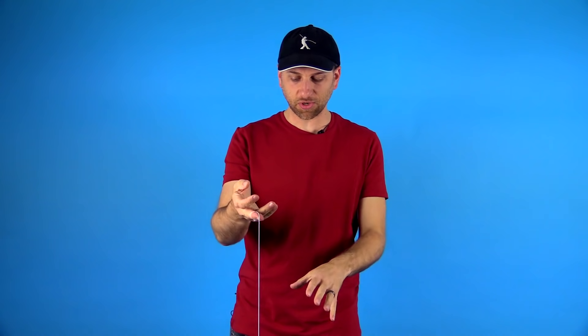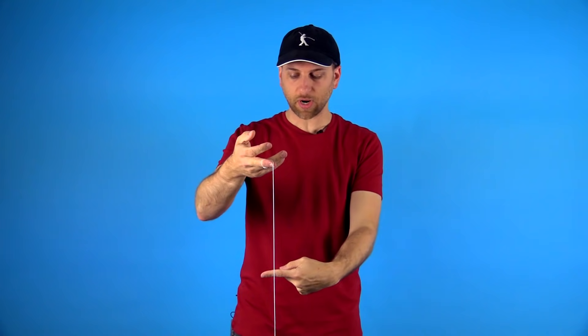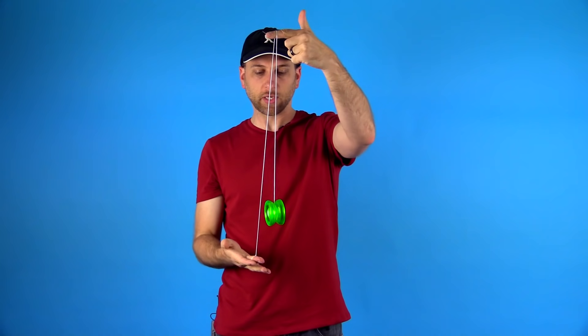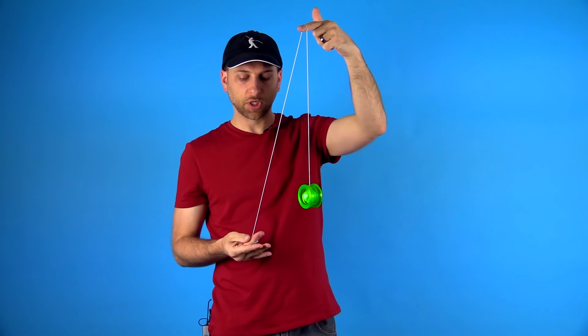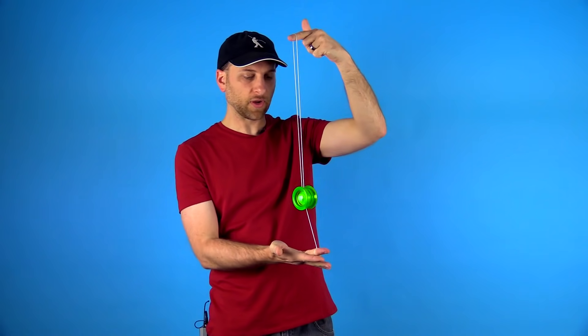The first thing you're going to do when you want to practice this trick is get a sleeper as good as you can. Then you're going to put your opposite hand in between the string and you, and you're going to push right into the string. Then you're going to lift the yoyo up, and you want to put it on the string just above your yoyo finger.